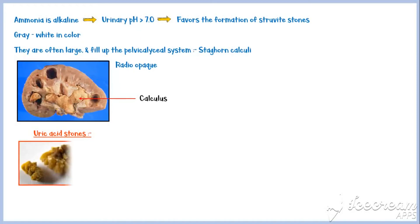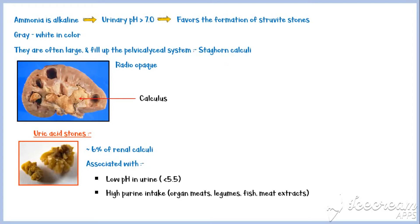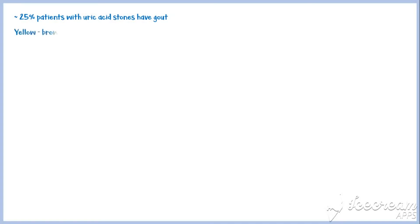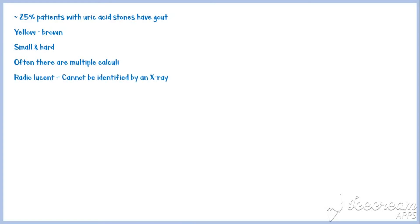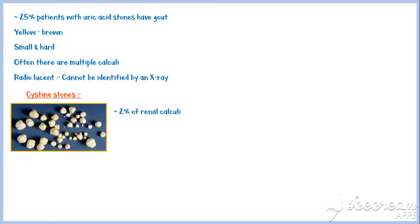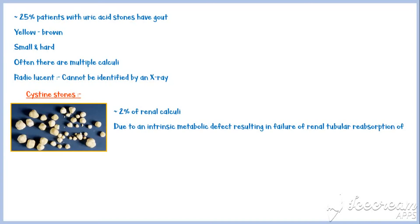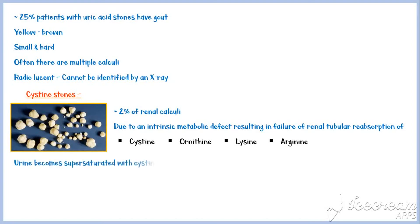Uric acid stones account for about 6% of renal calculi. They are typically associated with low urinary pH, high purine intake such as organ meats, legumes, fish, and meat extracts, and conditions with high cell turnover such as malignancies. Approximately 25% of patients with uric acid stones have gout. They are yellow-brown in color, small, and hard, and often there are multiple stones. Unlike other types of calculi, uric acid stones are radiolucent and cannot be visualized on an X-ray. Cystine stones account for about 2% of renal calculi. They form due to an intrinsic metabolic defect resulting in failure of renal tubular reabsorption of the amino acids cystine, ornithine, lysine, and arginine, causing urine to become supersaturated with cystine and leading to deposition of cystine crystals. They are white-yellow in color, soft, and waxy, and are slightly radio-opaque.